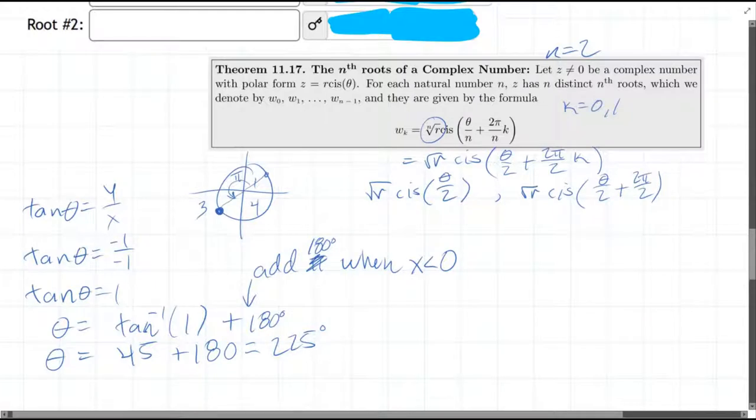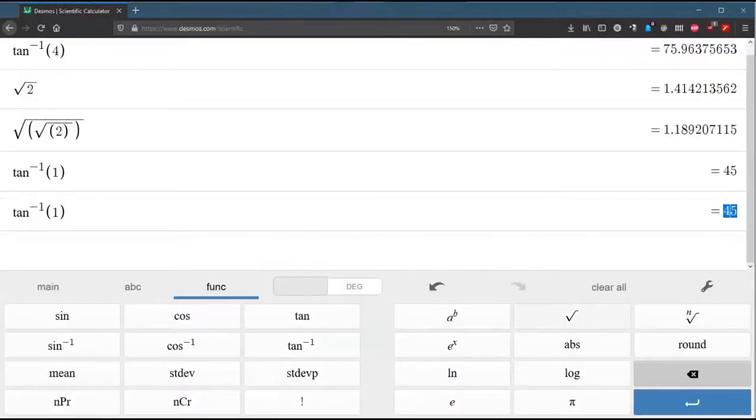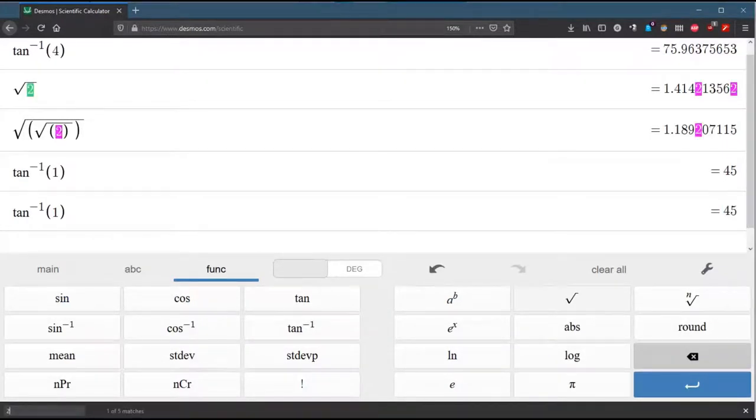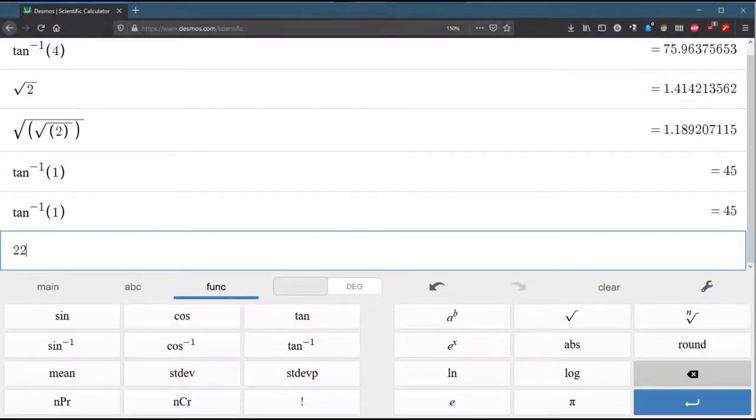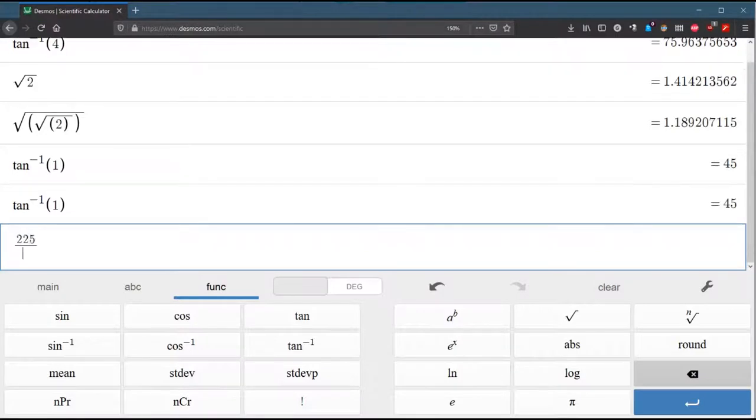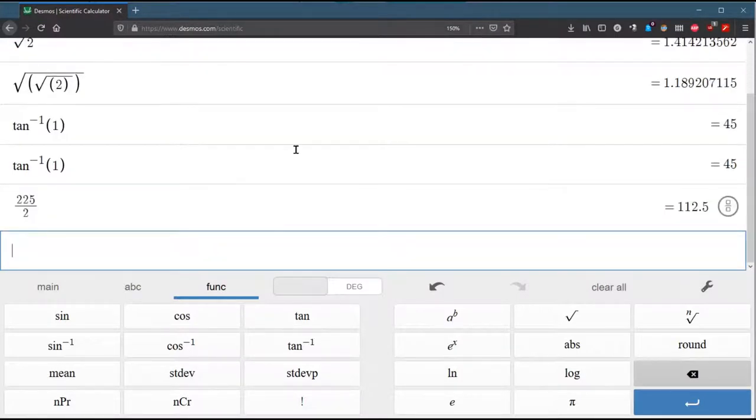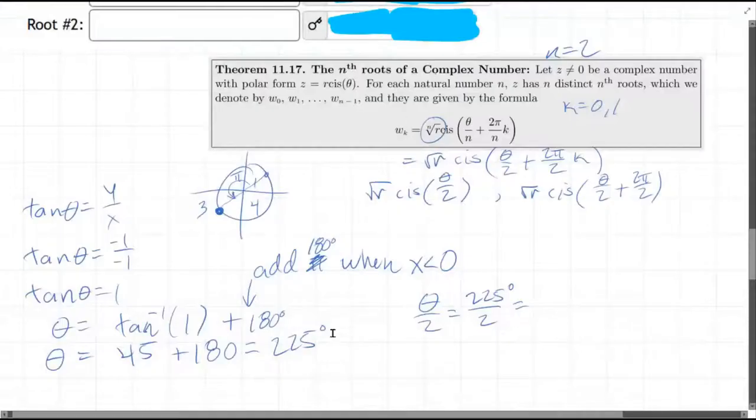And to be careful, this is the original theta. We're now going to take theta over 2. So we have to cut that in half. 225 over 2. We'll use the decimal version, 112.5. So that's our theta over 2.